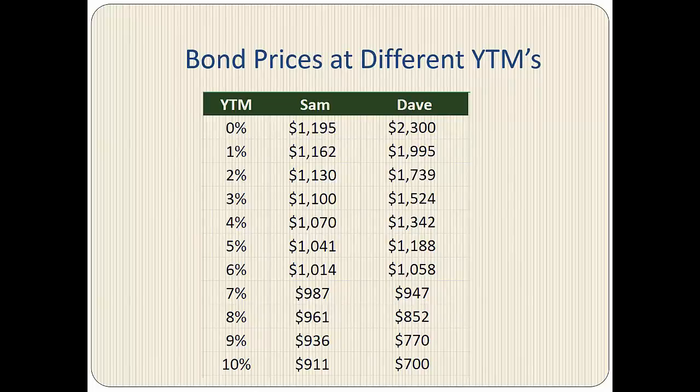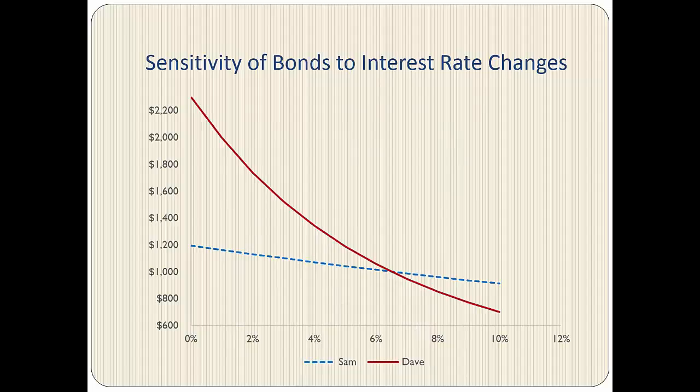We can extend our analysis to include several yields to maturity and chart the resulting prices for both bonds as shown here. Now we can plot the values for a graphical view of the sensitivities of bond prices to interest rate changes.